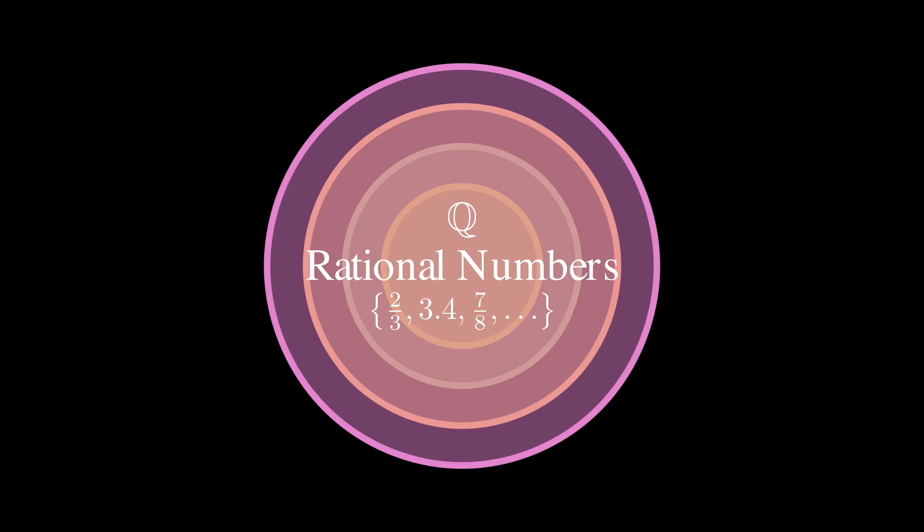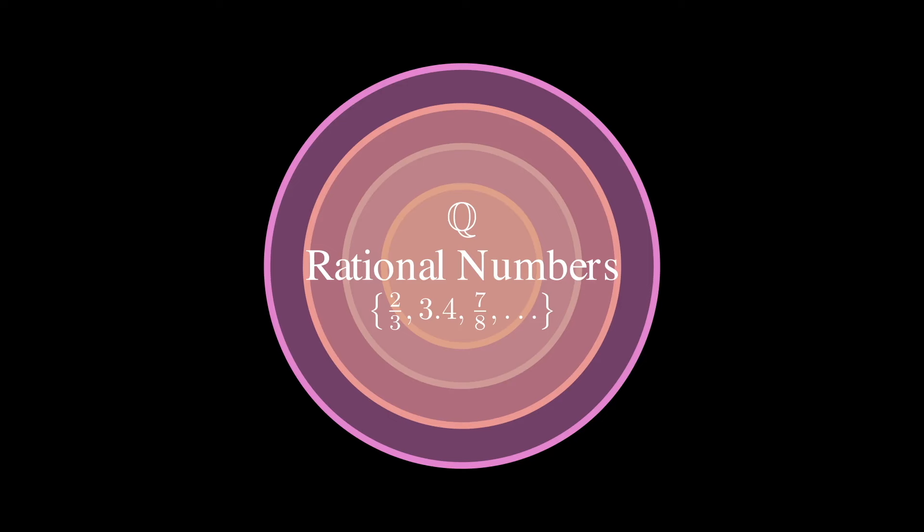These are the numbers that can be expressed as the ratio of two integers, often represented as A over B, where A and B are integers, but B is not 0. We're still not dividing by 0, after all.